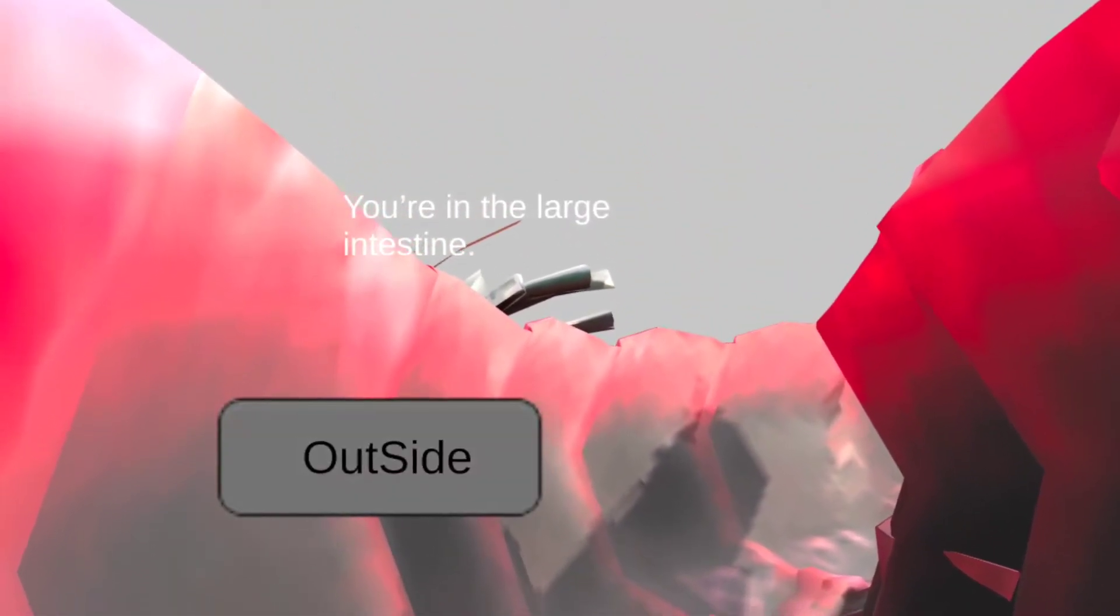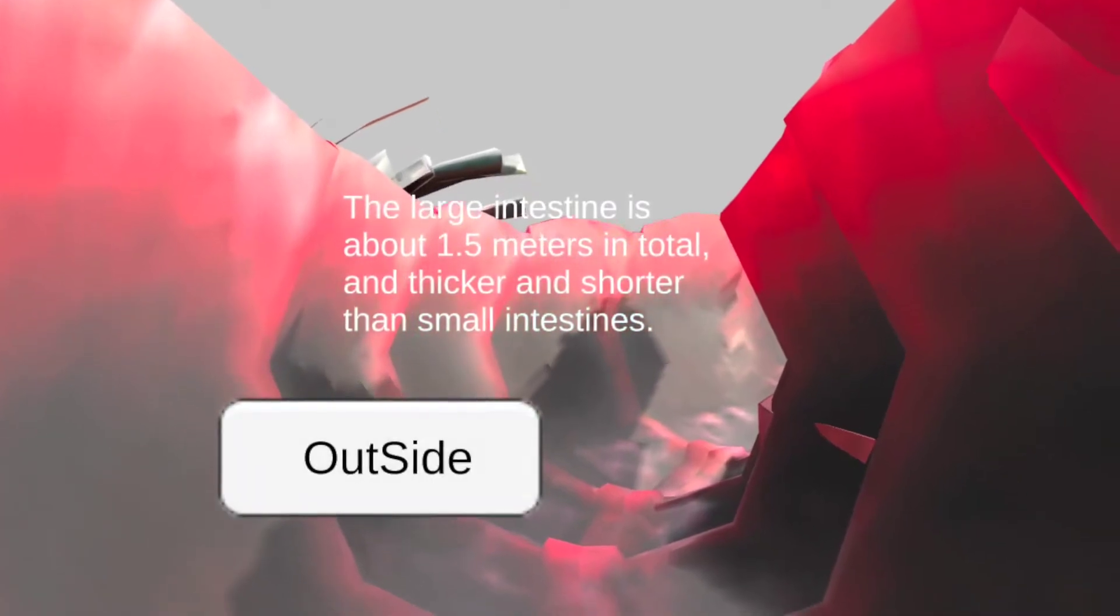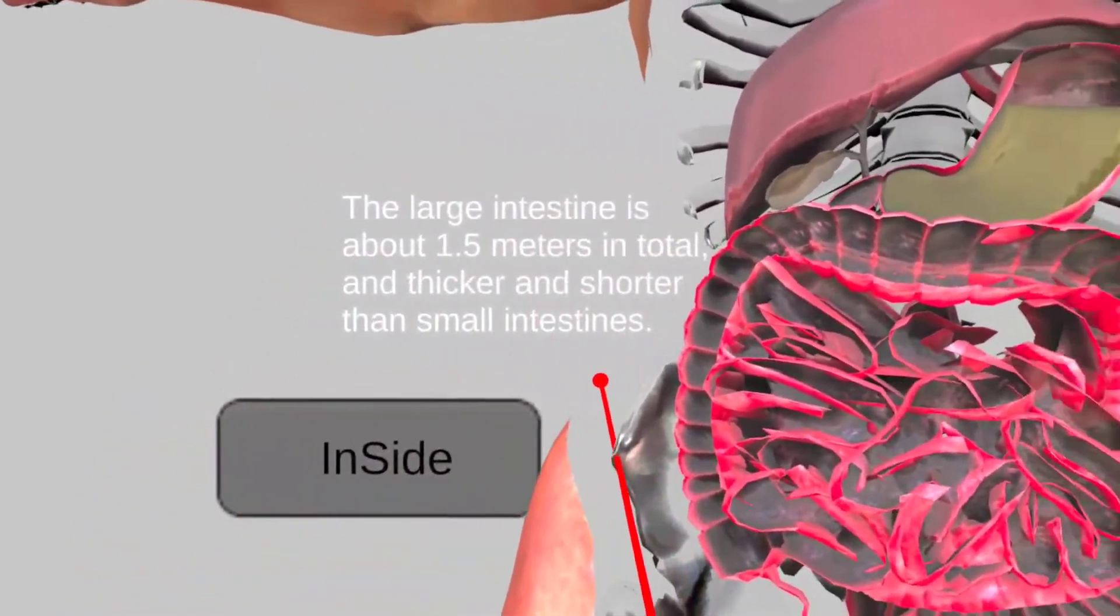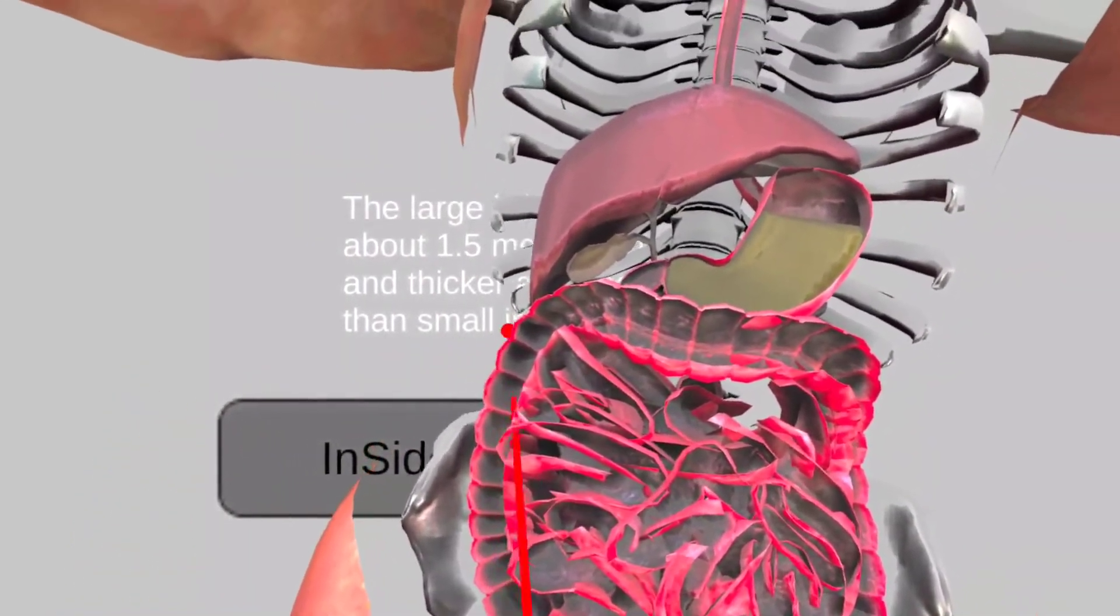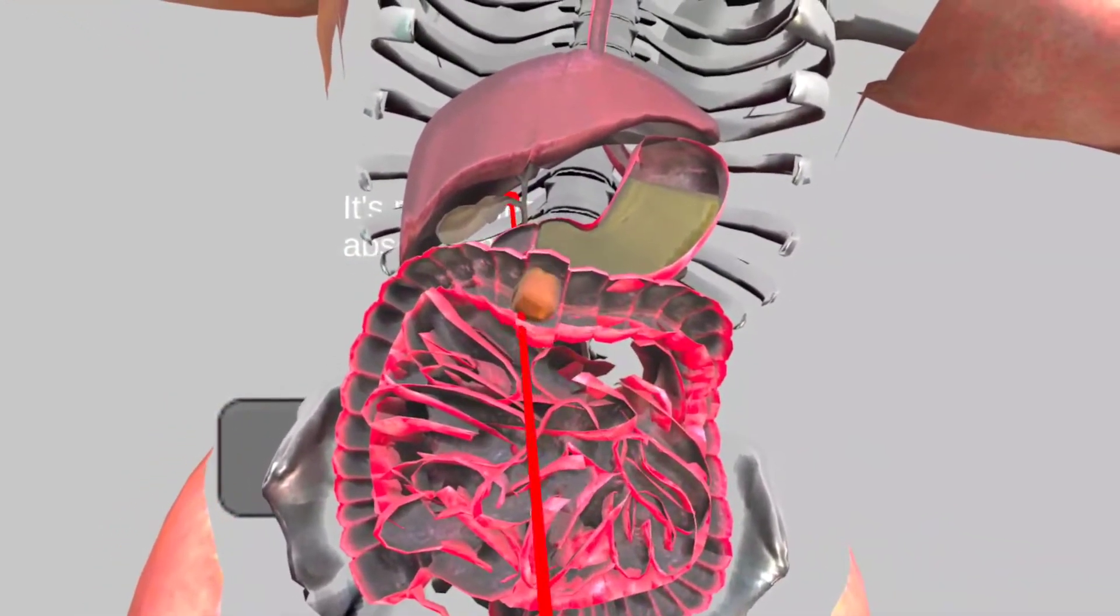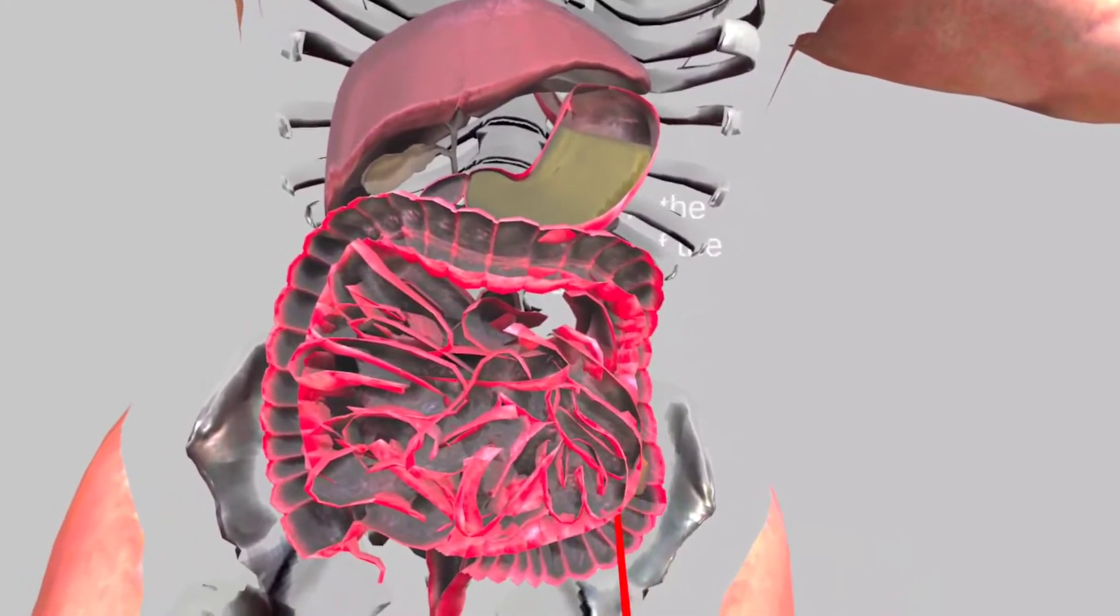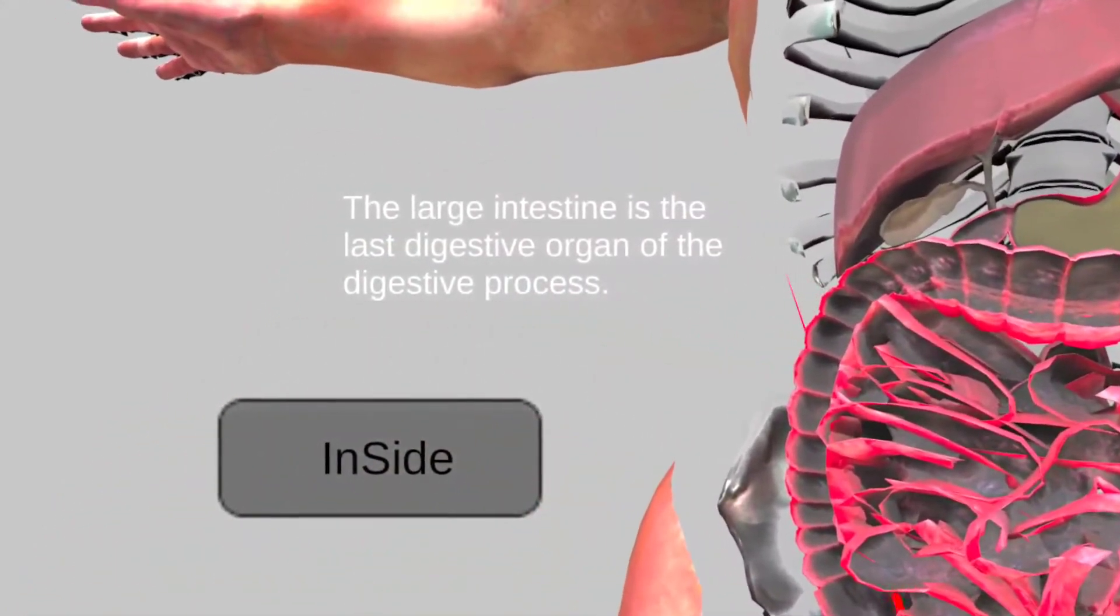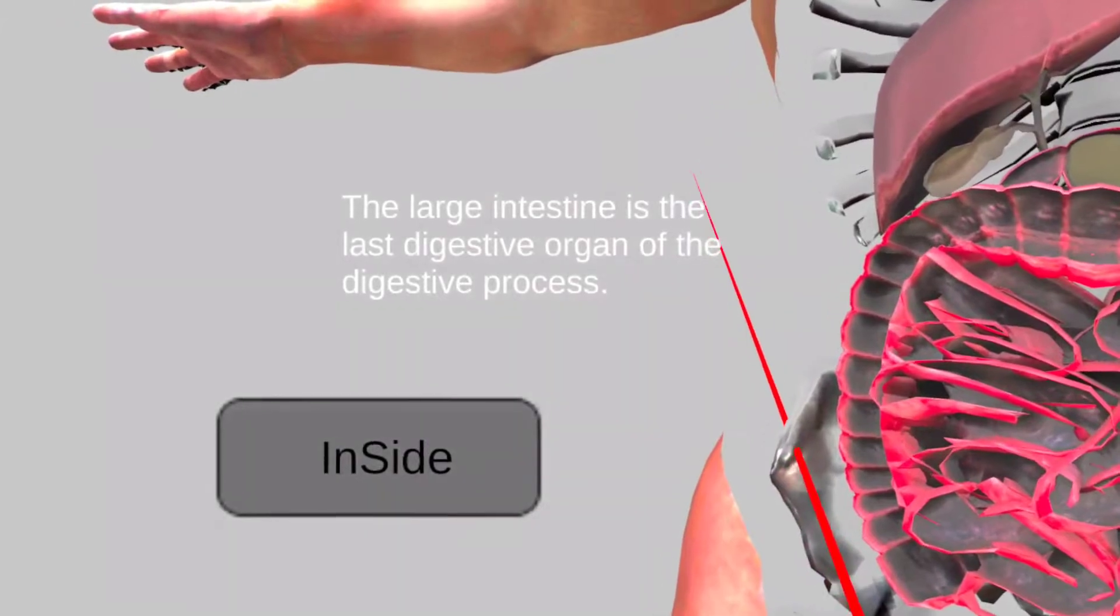You are in a large intestine. The large intestine is about 1.5 meters in total and thicker and shorter than small intestines. Its main function is to absorb water. The large intestine is the last digestive organ of the digestive process.